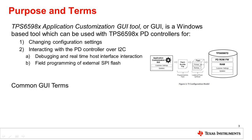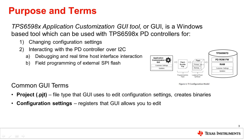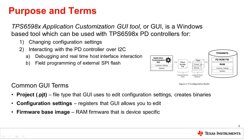Some of the common GUI terms used are listed below. A project file is a file type that the GUI uses to edit configuration settings and create binaries. Configuration settings are registers that the GUI allows you to edit, and the firmware-based image is a device-specific RAM firmware.